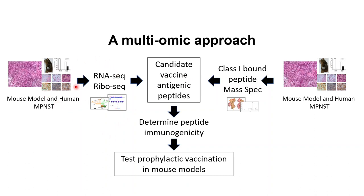The basis of this work is to leverage that idea and use a multiomic approach to develop a treatment for these tumors — using RNA-seq in a mouse model to identify non-normal RNA sequences and predict expressed neoantigens, and importantly confirming those neoantigen peptides are expressed using mass spectrometry to identify peptides bound to the HLA/MHC class 1 complex. If we can identify and verify those peptides, we can determine whether they elicit an immune response and potentially develop a prophylactic vaccine.